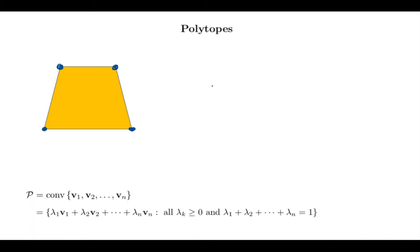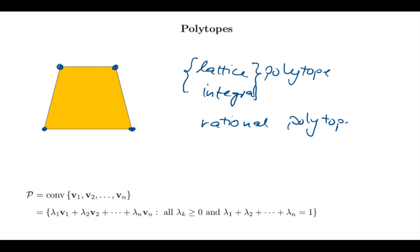While we're talking about definitions, sometimes we will use the phrase lattice polytope or integral polytope. And what this means is I can choose this convex hull description using points with integer coordinates. I will also sometimes talk about a rational polytope, and this means my vertices have rational entries.